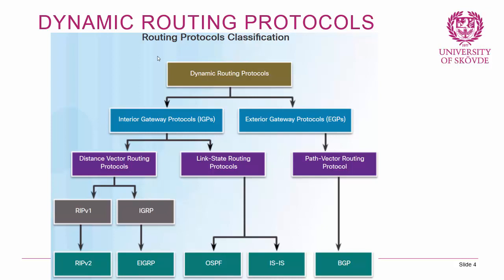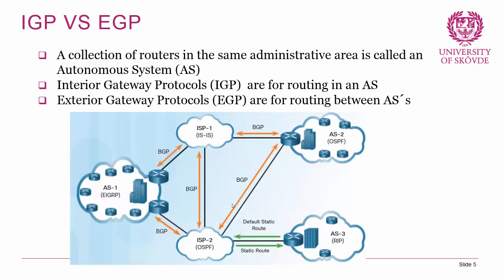Let's move on to a closer look at the difference between IGP and EGP, interior gateway protocols and exterior gateway protocols. When you collect a bunch of routers in the same administrative area, you call this an autonomous system. In the picture, you would have one AS here, one AS here, one AS here, and two ISPs that connect those ASes together. Interior gateway protocols are for routing within an AS, and for routing between different ASes we use exterior gateway protocols, most usually BGP. Practically speaking, an AS is most commonly one site, one network, or one routing domain.